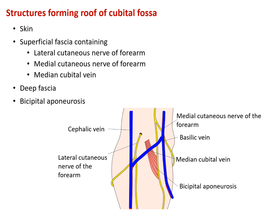The structures present in the roof of cubital fossa lie superficial to this triangular intermuscular space. From superficial to deep: the most superficial structure is skin. Once we remove the skin we find superficial fascia, which contains cutaneous nerves and superficial veins. In this case we find two cutaneous nerves of the forearm: the medial cutaneous nerve of the forearm, which is a branch of the medial cord of brachial plexus, and the lateral cutaneous nerve of the forearm, which is the continuation of the musculocutaneous nerve.